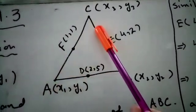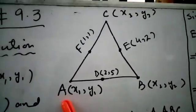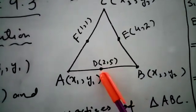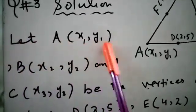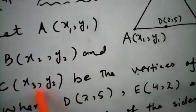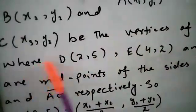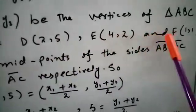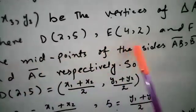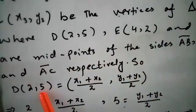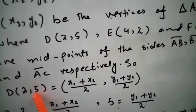To find vertices A, B, and C we will use the midpoint formula by putting in the values of D, E, and F. Let A(x1, y1), B(x2, y2), and C(x3, y3) be the vertices of triangle ABC, where D(2,5), E(4,2), and F(1,1) are midpoints of sides AB, BC, and AC respectively.